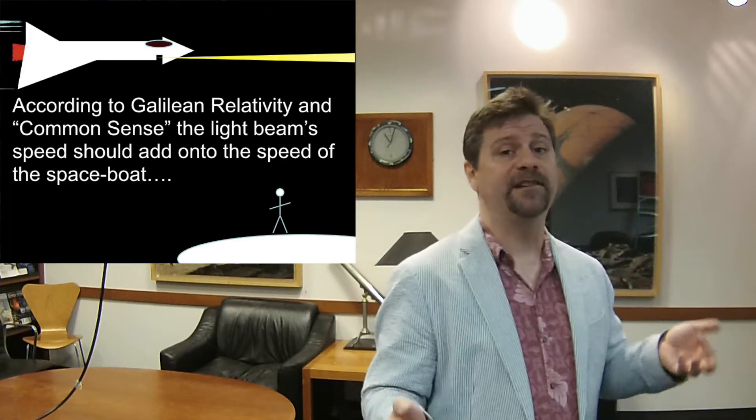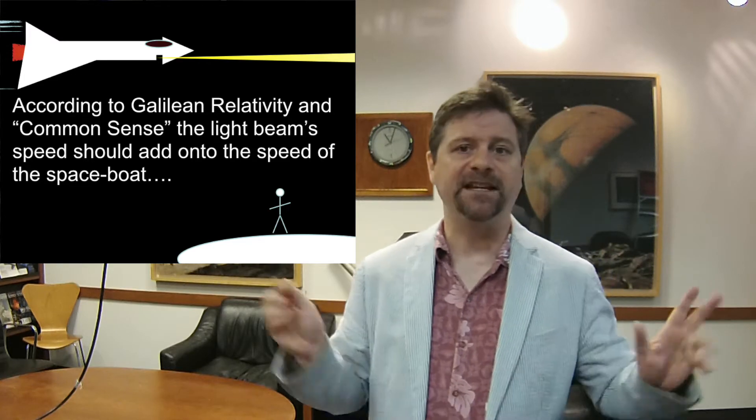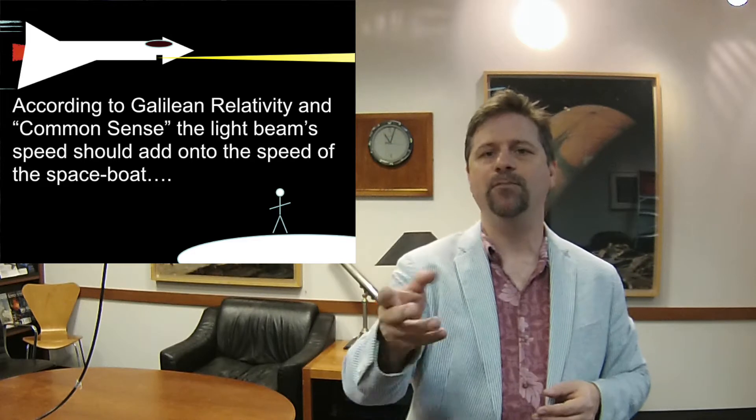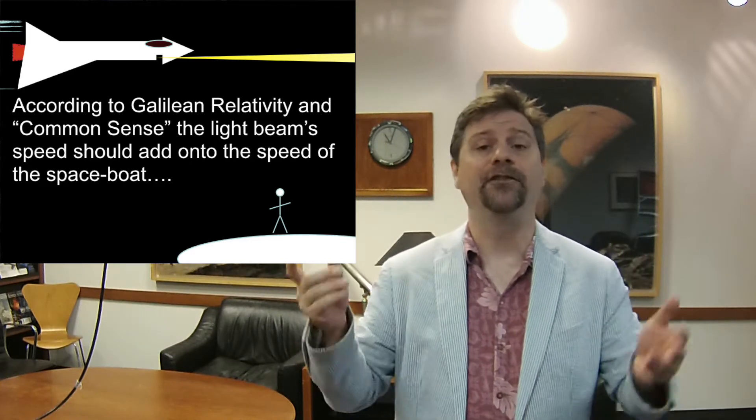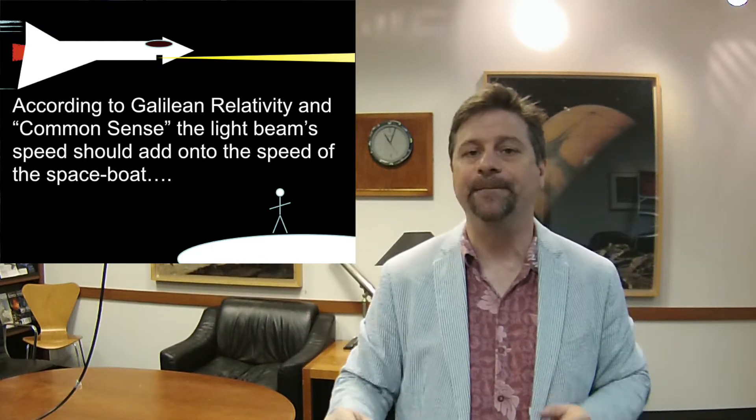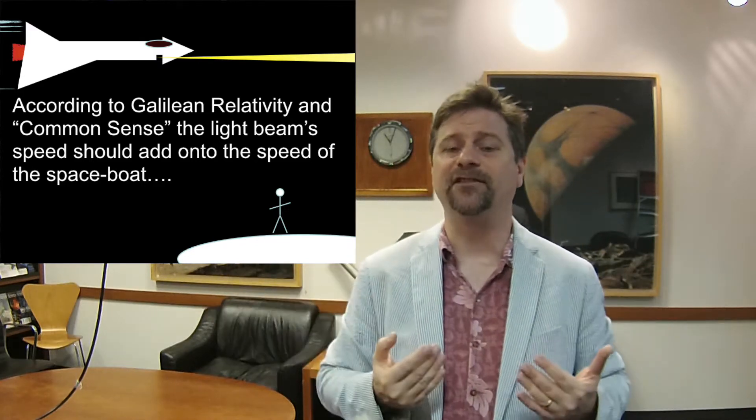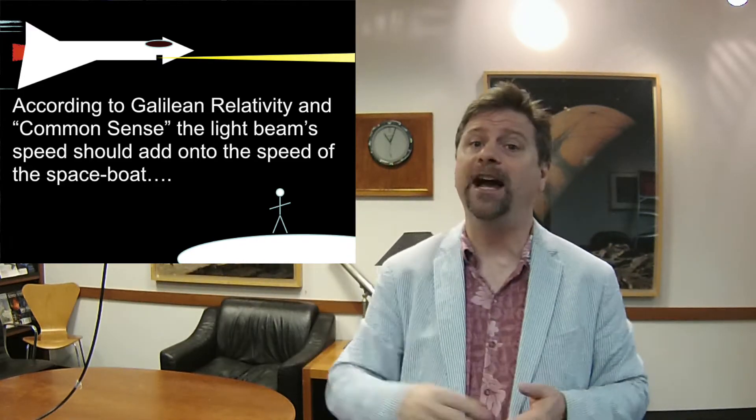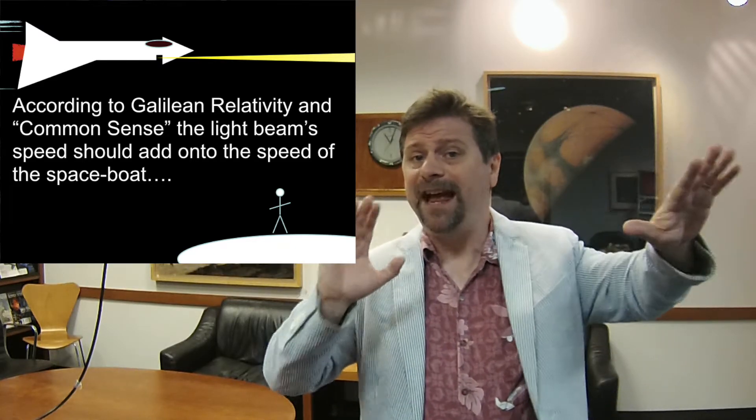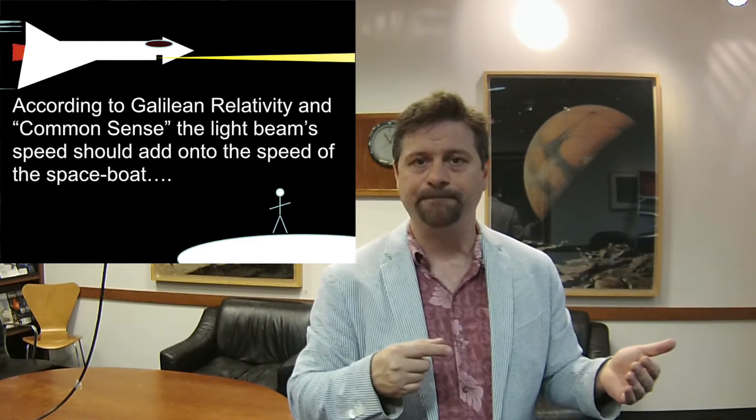Galileo would say, I take a flashlight and point it forward from the bow of my ship. The ship is going very fast. For an outside observer, when I point my flashlight forward, I see the light go out at the speed of light. According to Galileo, an observer on land watching this speedy boat should see that light beam going at the speed of light plus the speed of the boat.